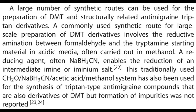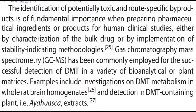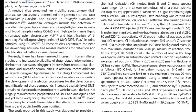A commonly used synthetic route for large-scale preparation of DMT derivatives involves reductive amination between formaldehyde and the tryptamine starting material in acidic media, often carried out in methanol. A reducing agent — often sodium cyanoborohydride — enables the reduction of an intermediate imine or iminium salt. This formaldehyde/sodium cyanoborohydride/acetic acid/methanol system has also been used for the synthesis of triptan-type anti-migraine compounds, but formation of impurities was not previously reported.